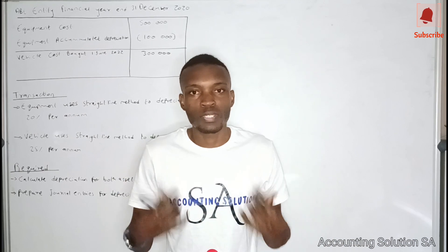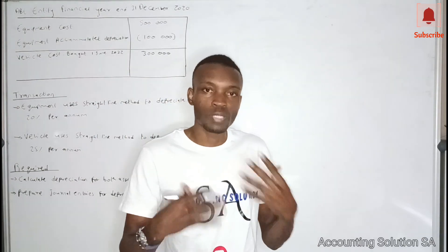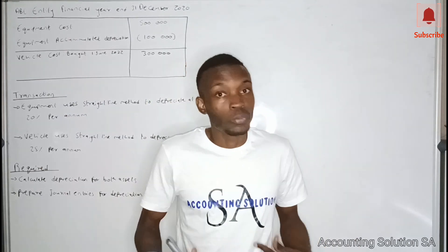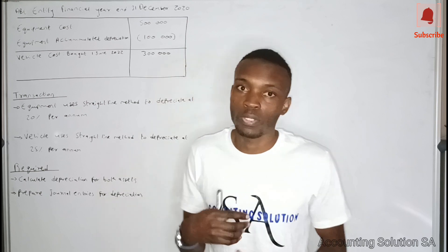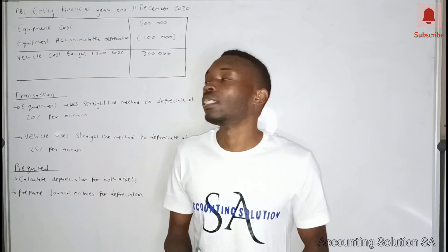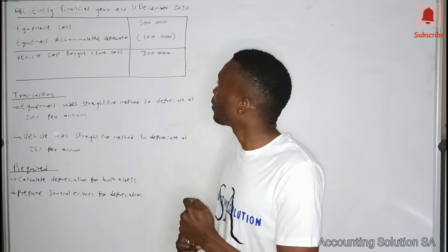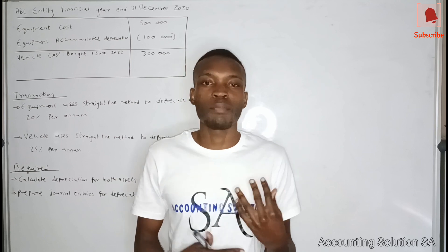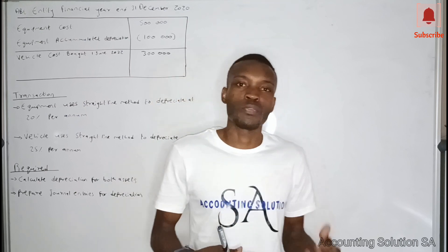In today's lesson we are going to calculate depreciation using a straight line method. Please watch all the video so that you understand the process. I have two examples that we are going to use to complete the straight line method, so that you can complete this method in any case you face in accounting. This is ABC entity with a financial year ending 31 December 2020, meaning the financial year started 1 January 2020. It's very important to know your accounting period when dealing with depreciation.